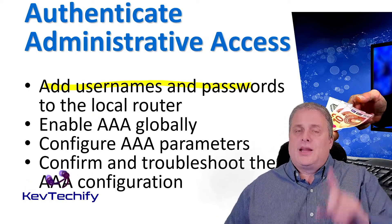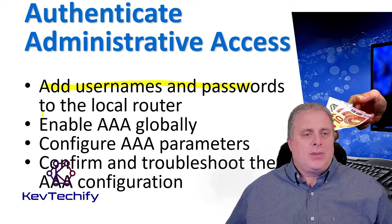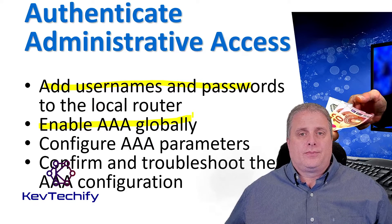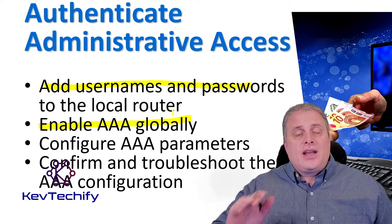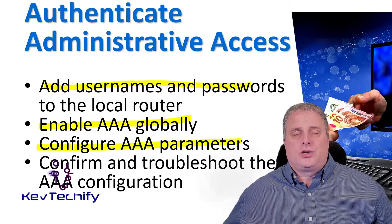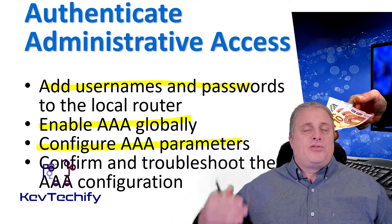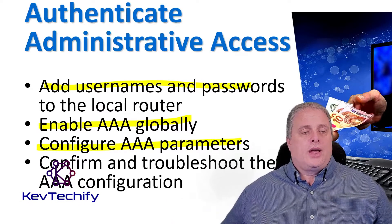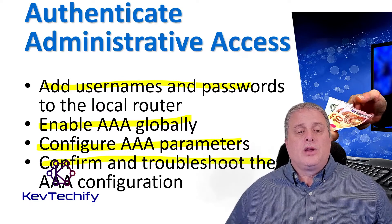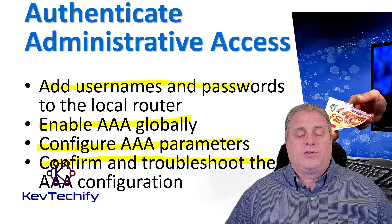You have to add the users to each device. The second step is to enable AAA globally on your router. Once you've got it enabled, you can go in and configure AAA. Once you've enabled and configured it, the last step — step four — is you can confirm and troubleshoot the AAA configuration.